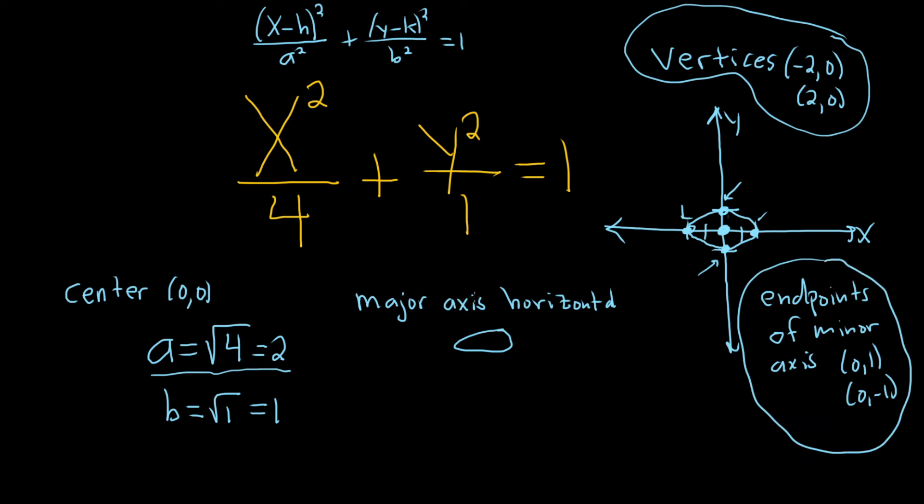So we've got the sketch. We've got the vertices, the endpoints of the major axis. The only thing we need is the foci.